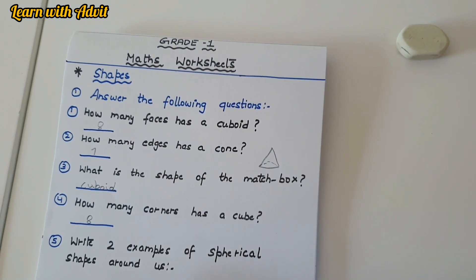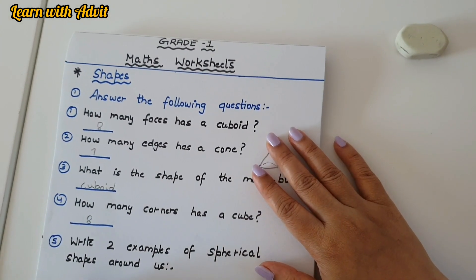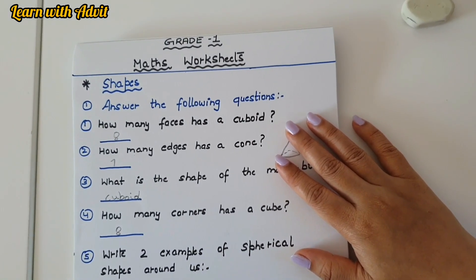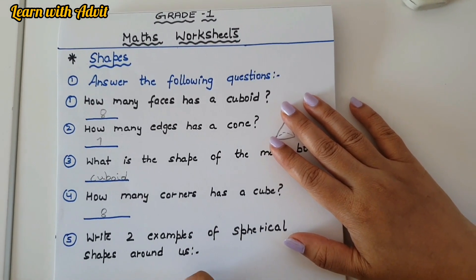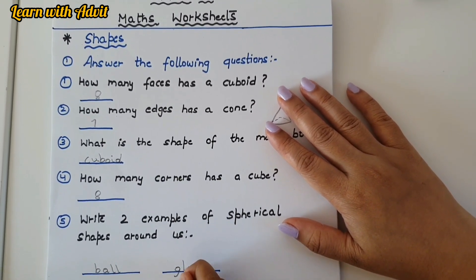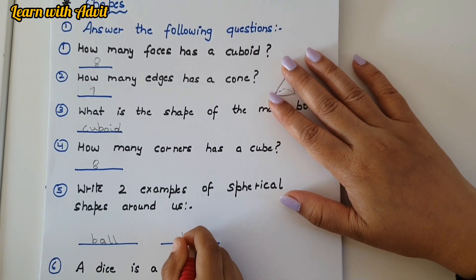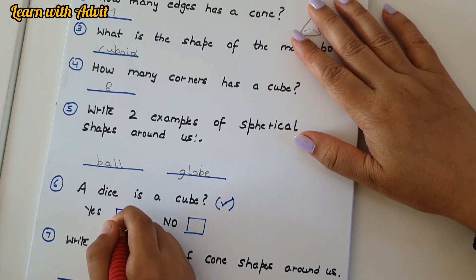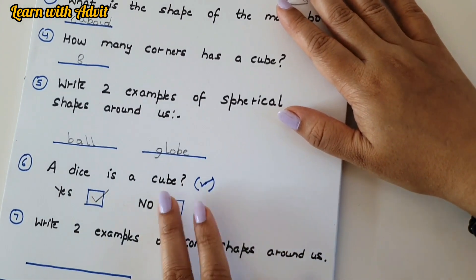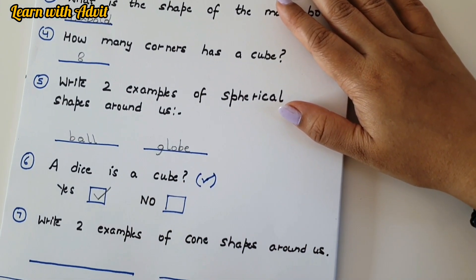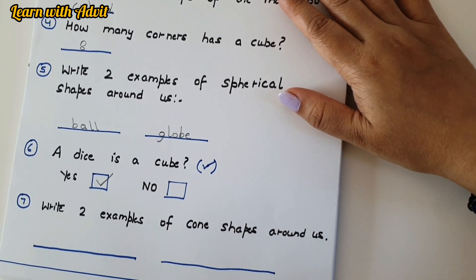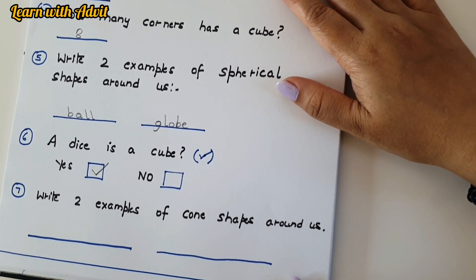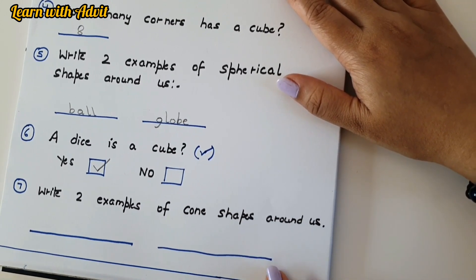Write two examples of spherical shapes around us: like a ball, or even a globe — the model of the earth. A dice is a cube — yes! Can you give more examples of a cube? It could be a parcel box, a regular box, or an ice cube.